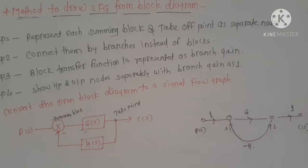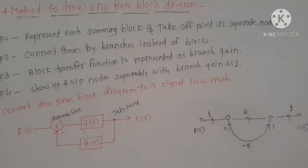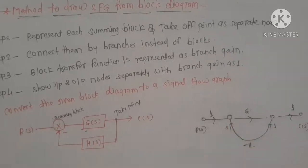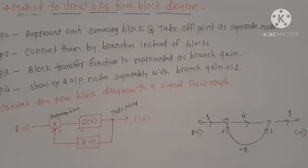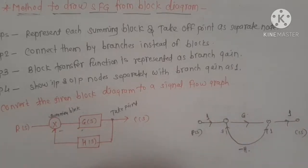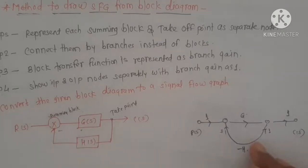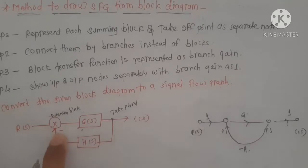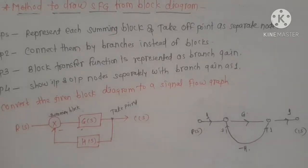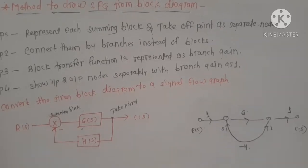This is very simple — drawing a signal flow graph from a block diagram. First, mark down the nodes: input node, output node, and whatever summing blocks or takeoff points are present, mark them as nodes. After that, connect them with branches instead of blocks. Then write the transfer function as the branch gain. That's why we have written minus H — because the feedback is negative. This is the method of drawing a signal flow graph from a block diagram.